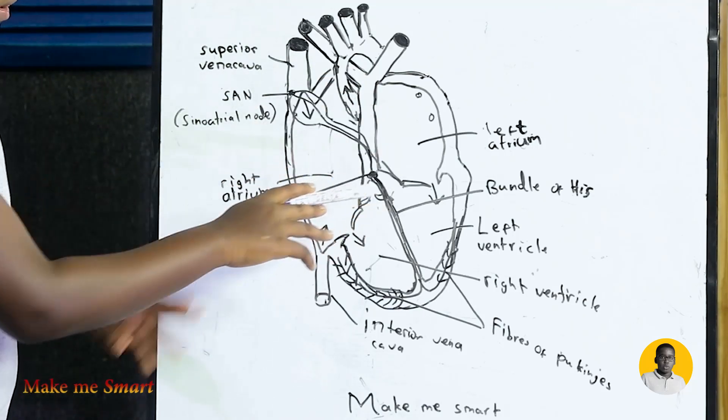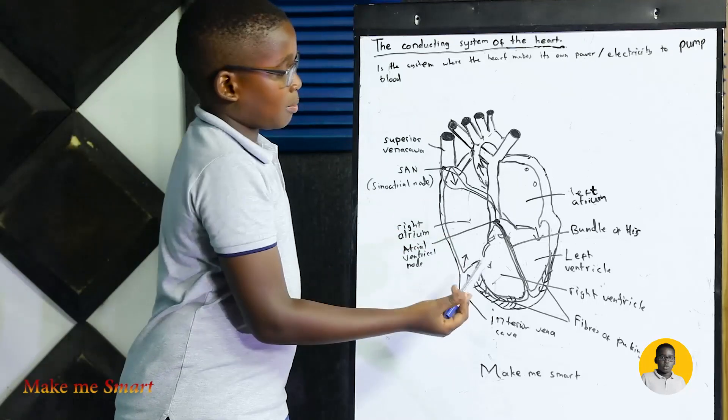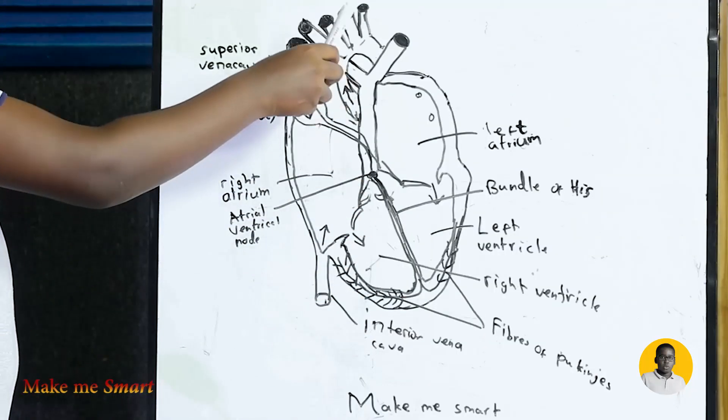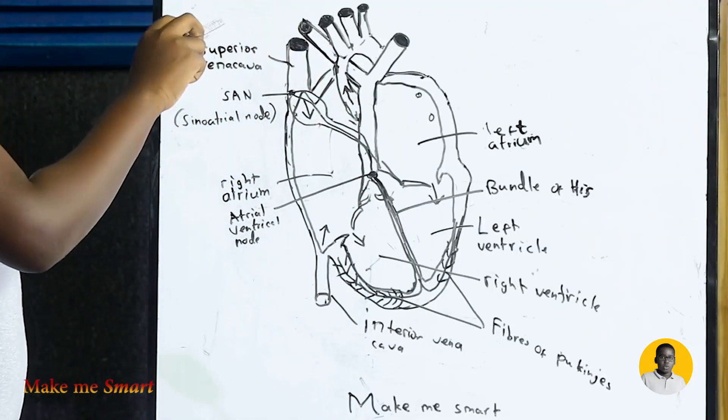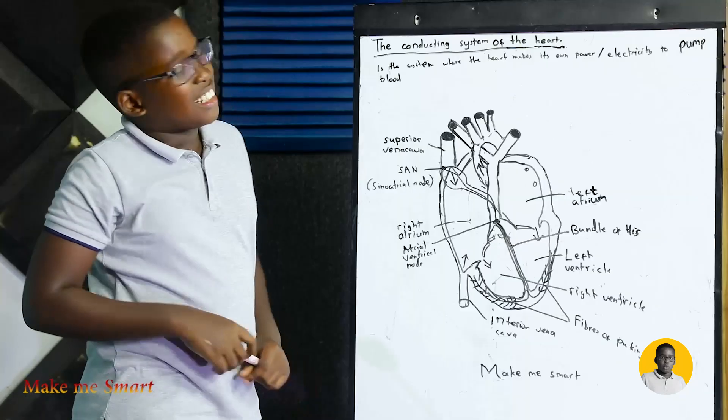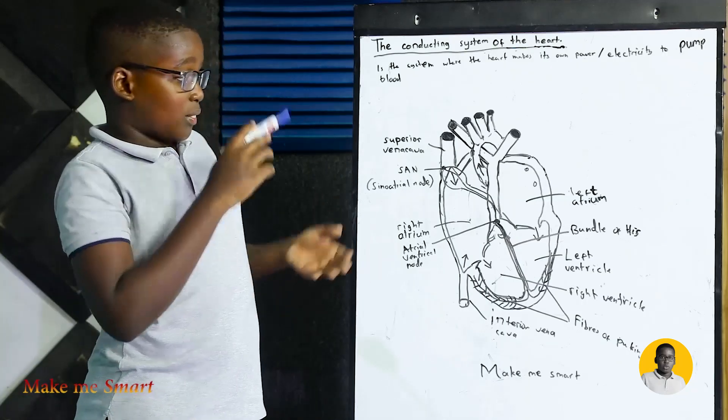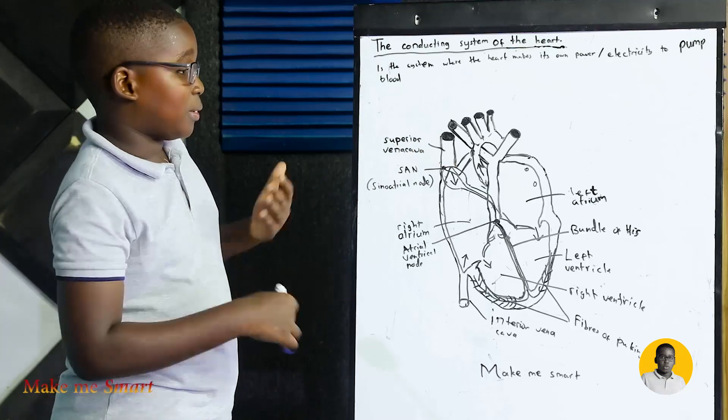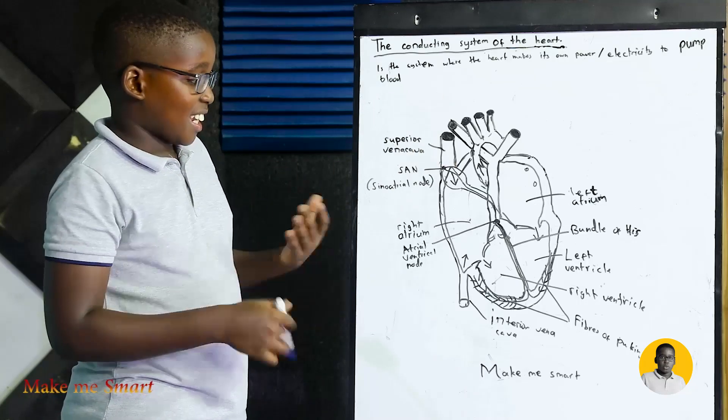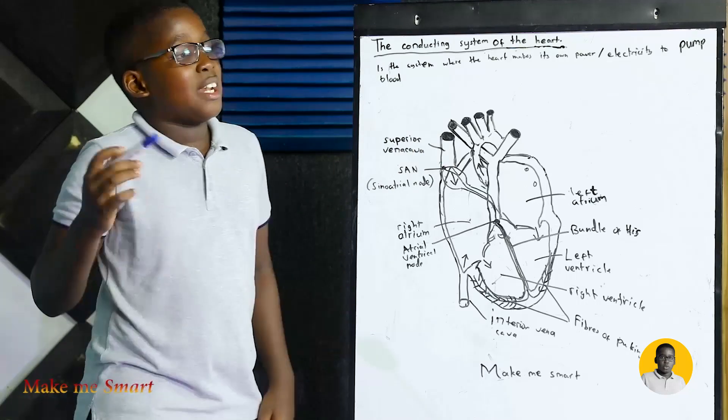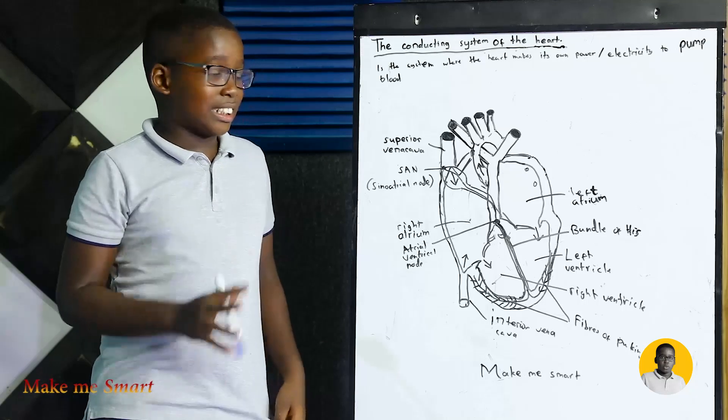Then the lower chambers pump blood up into the pulmonary vein and into the aorta which is over here. It's a long process and repeats again and again. That's why the heart beats twice at a time because the upper chamber is beating down, putting blood down through these valves here.